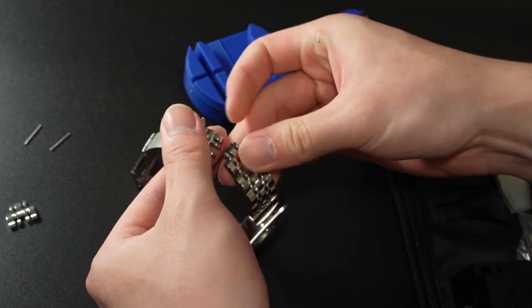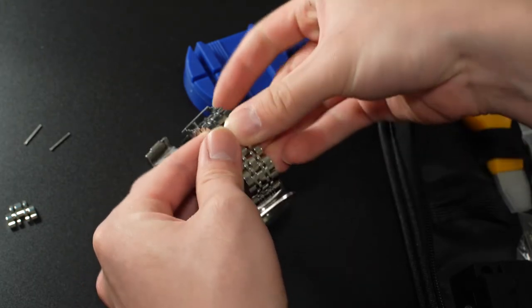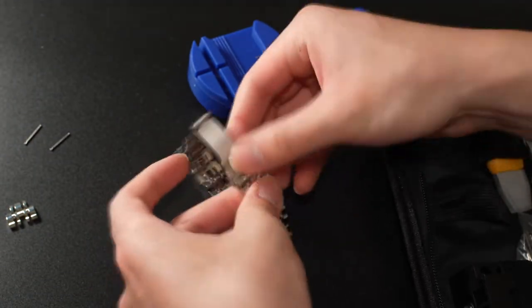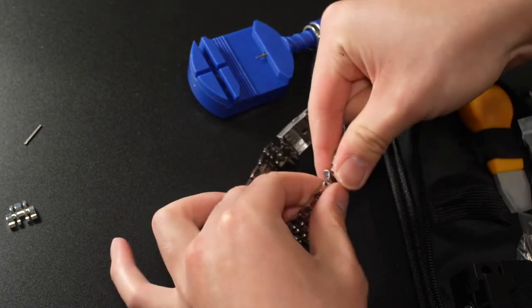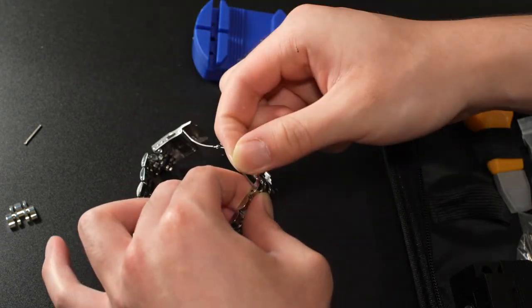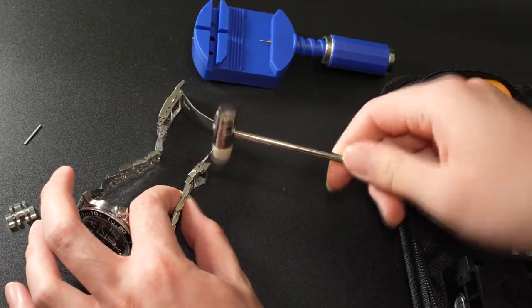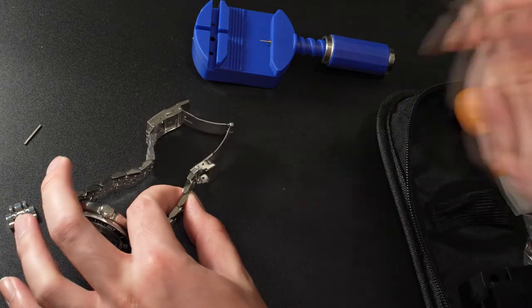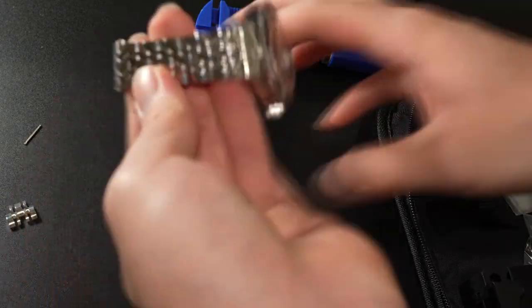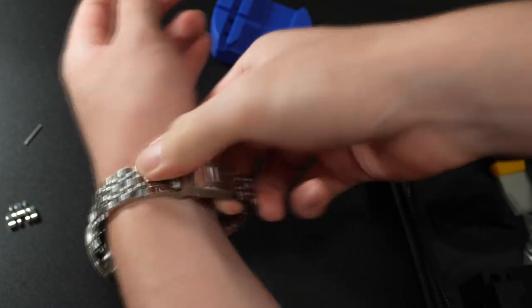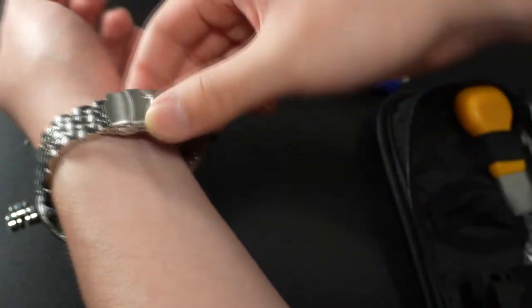Once you've removed all the excess links, you can now put the bracelet back together by first connecting the two disconnected ends of the bracelet, inserting the retaining pin back into its channel and then using the soft mini hammer to hammer it back home. Once you're done, try on the watch and see if it's now fit to size. If it's too large or too small, you can always just knock out more links or put some back in.